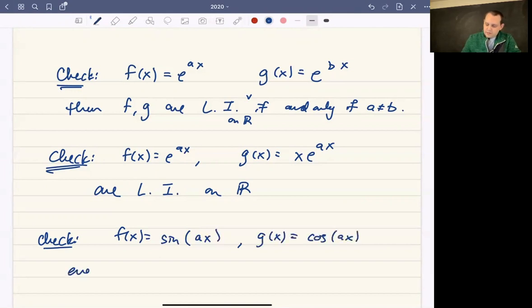and g of x is cosine of ax, those are also linearly independent on all of R.